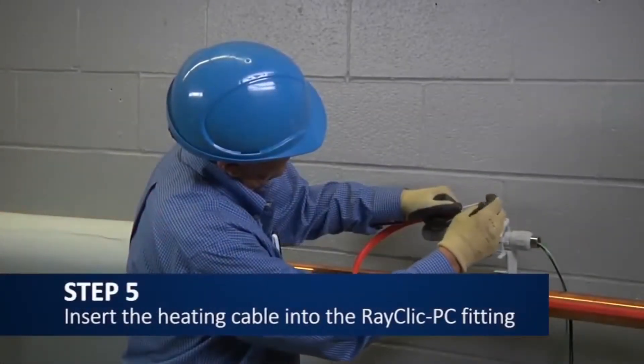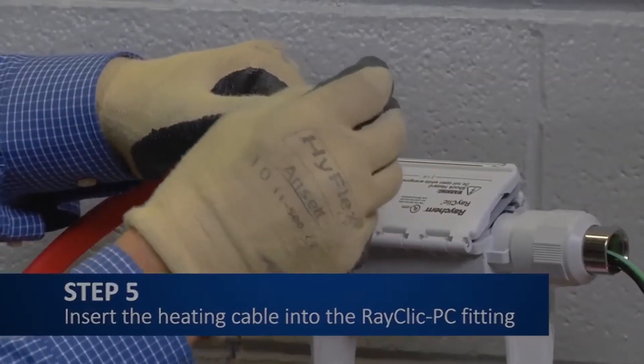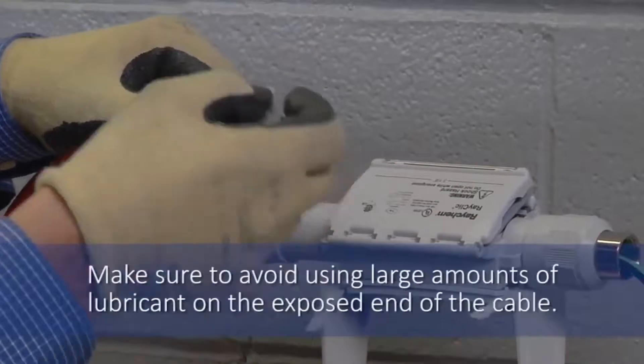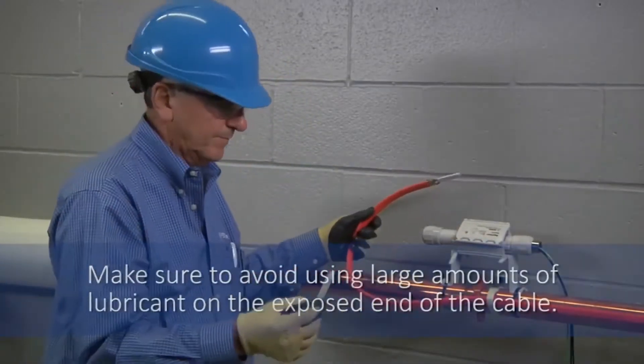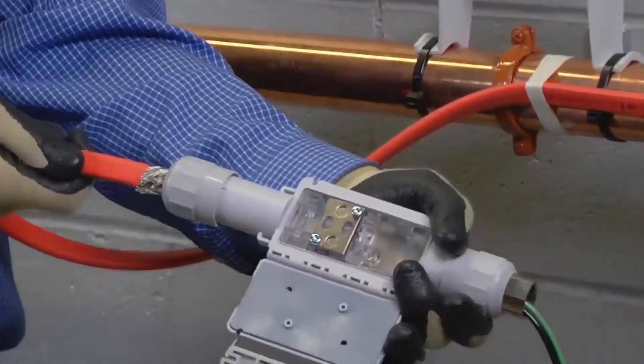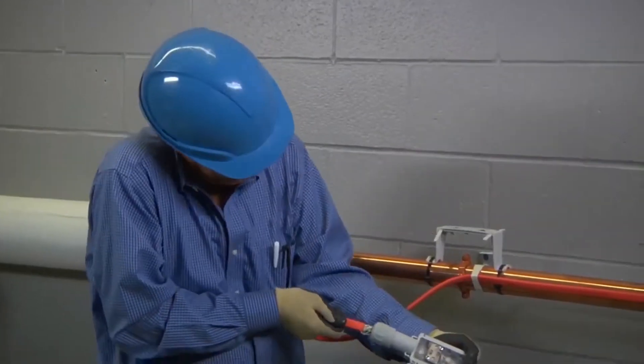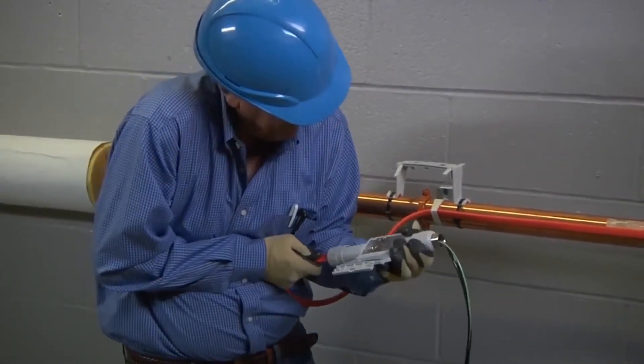Now, apply a small amount of supplied cable lubricant to the heating cable just in front of the ground braid clip. Make sure to avoid using large amounts of lubricant on the exposed end of the cable, and insert the prepared end of heating cable into the RayClick PC fitting by pushing the cable through the gland nut and rubber boot into the connector.